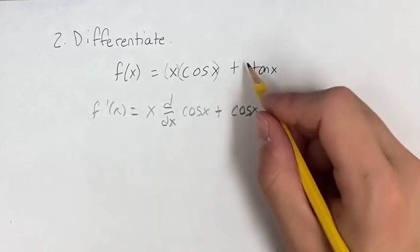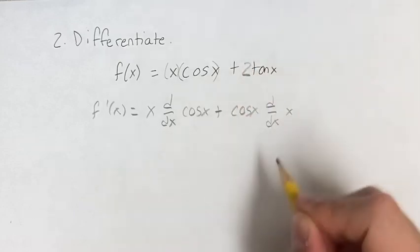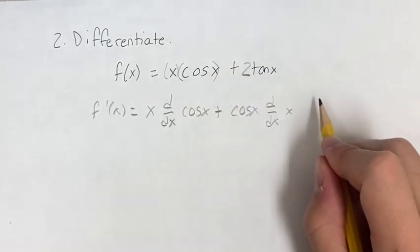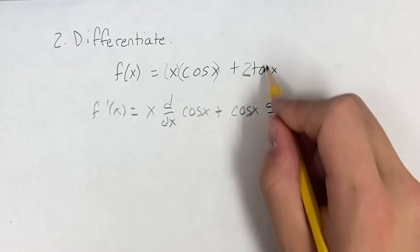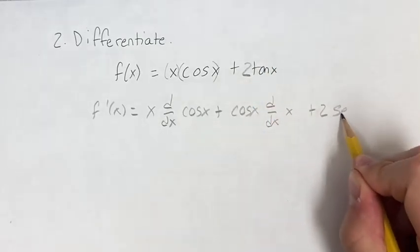And then we are going to be adding this to the derivative of, forgot the two there, two. Then the derivative of tangent x is secant squared x.